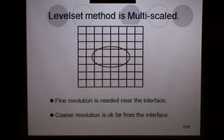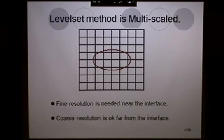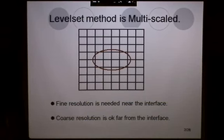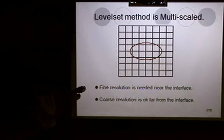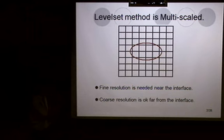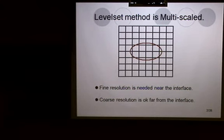Today, I'd like to talk about a second-order accurate level set method on quadtree grids. As you know, level set method is a method that the original problem is surface problem. Given this curve or surface in 3D, it represents the geometric object by Eulerian function.